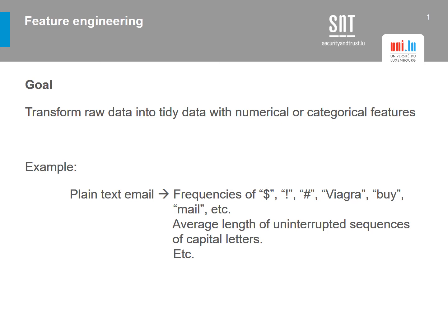The feature engineering part consists of transforming this plain text into different features. It can be the frequency of certain characters like dollar signs or exclamation points, or the frequencies of specific keywords like 'Viagra', 'buy', 'mail', etc. These features correspond to the columns in the dataset.